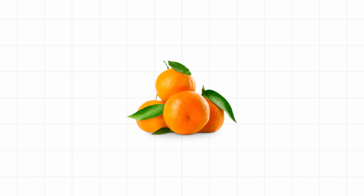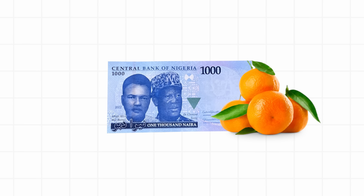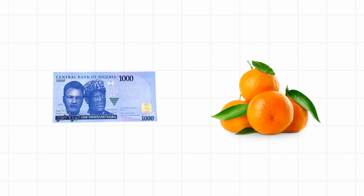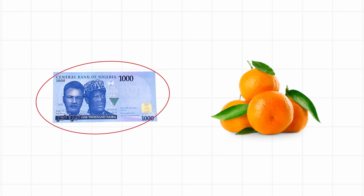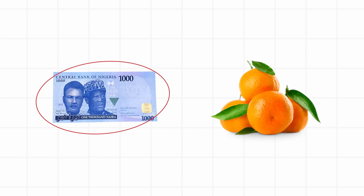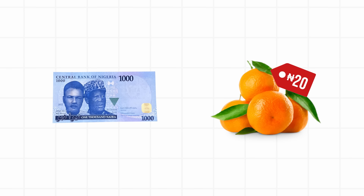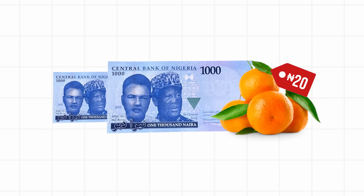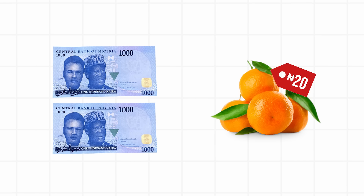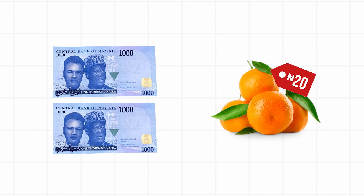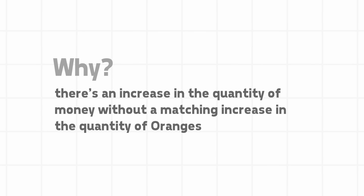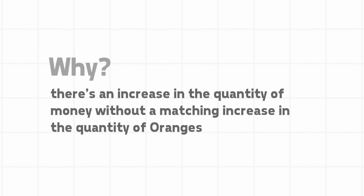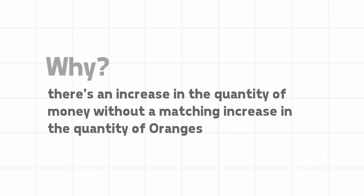If there were only 50 oranges and 1,000 naira total money supply in a hypothetical economy, all of the oranges in that economy will have prices that do not exceed 1,000 naira when summed together — in this case, each orange will cost 20 naira. Imagine if the government prints an extra 1,000 naira. While the quantity of oranges remains constant, the prices will not: each orange will now sell for 40 naira, because there is an increase in the quantity of money without a matching increase in the quantity of oranges.